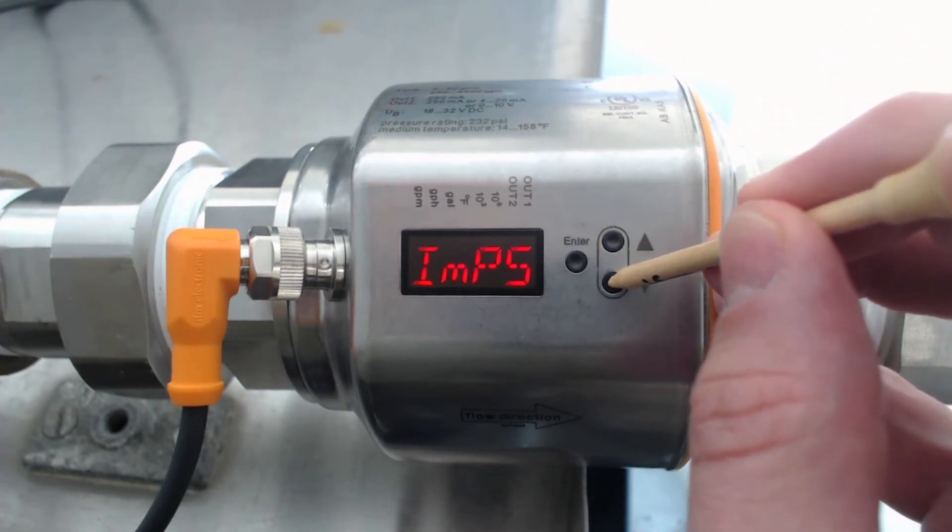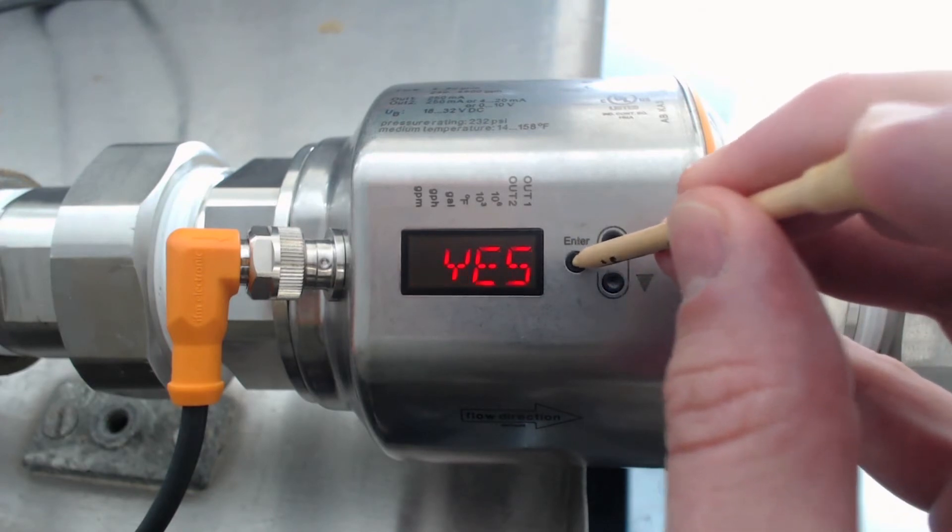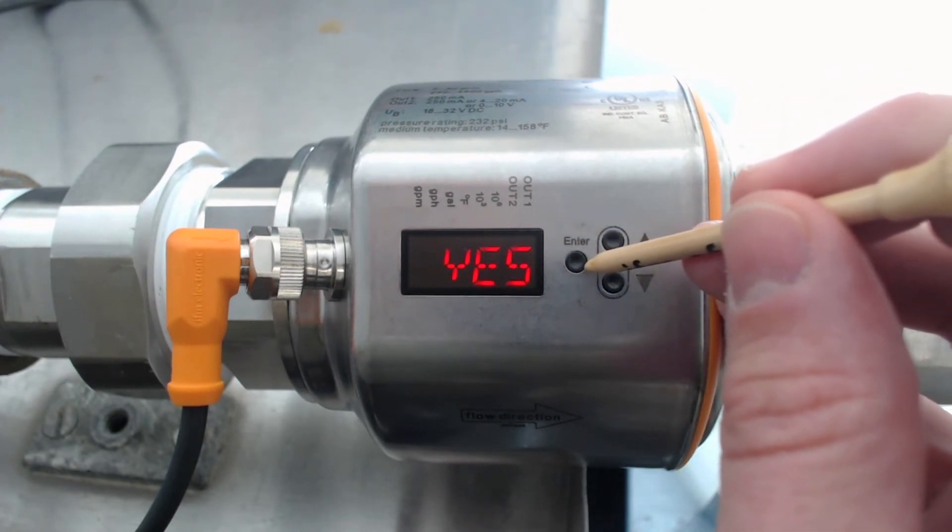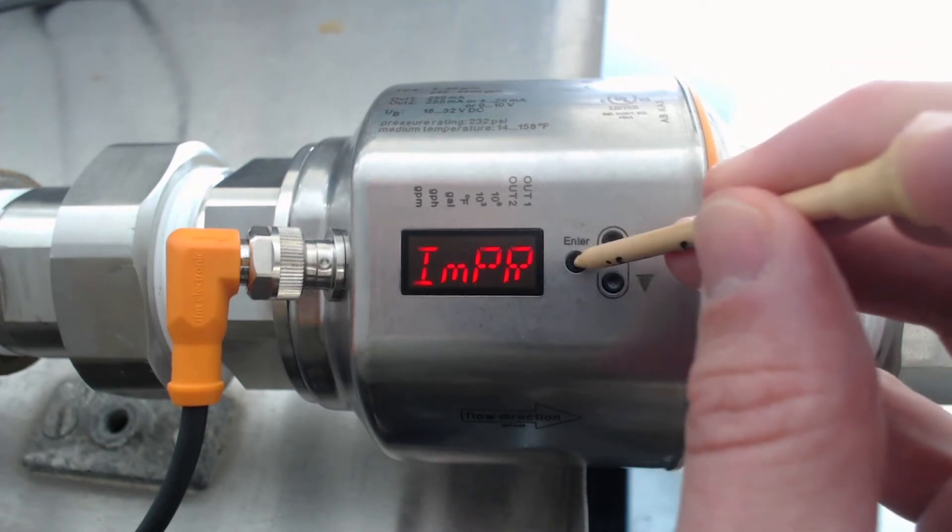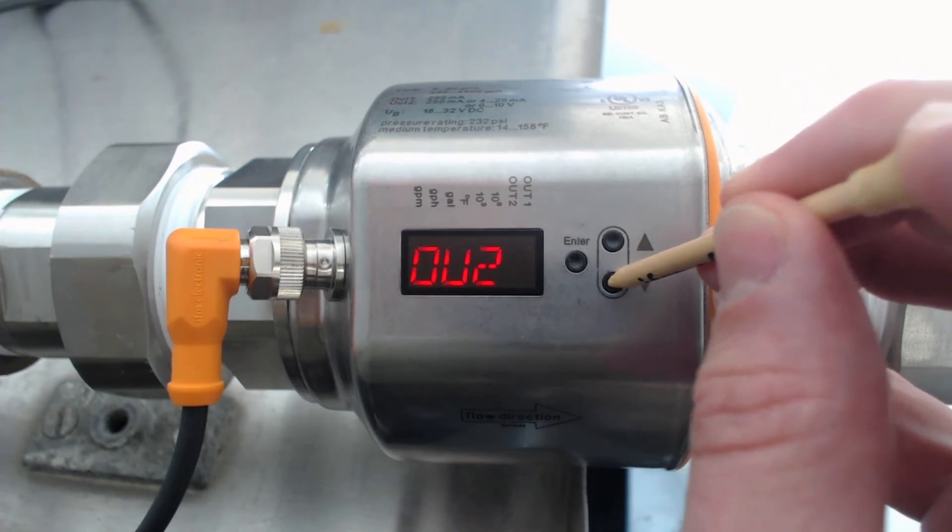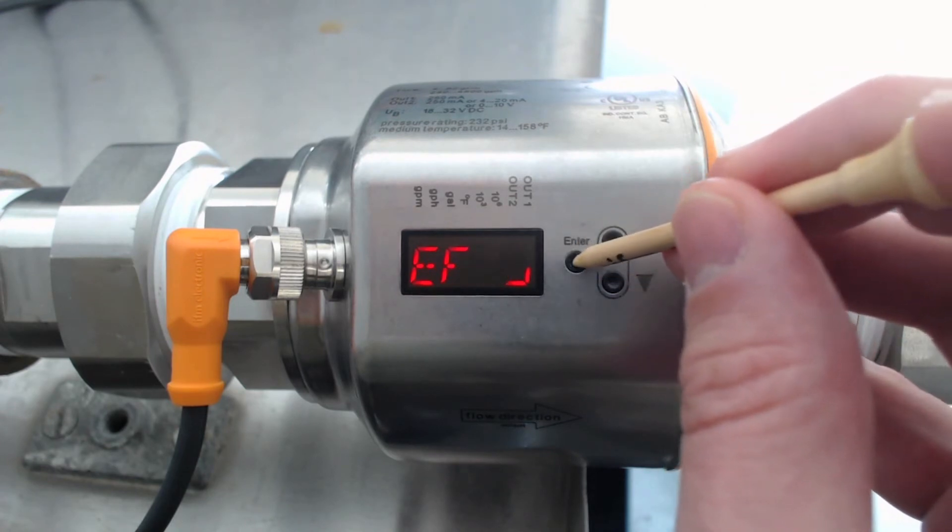The next step is IMPR, which as you can see is already set to Yes. Press Enter to save. Press the lower button and scroll to EF. Then press Enter.